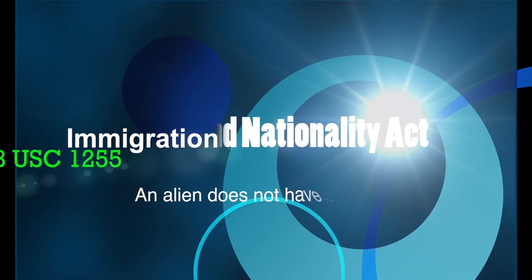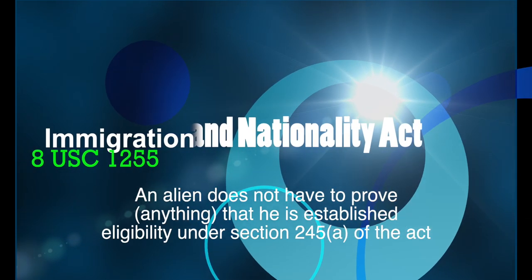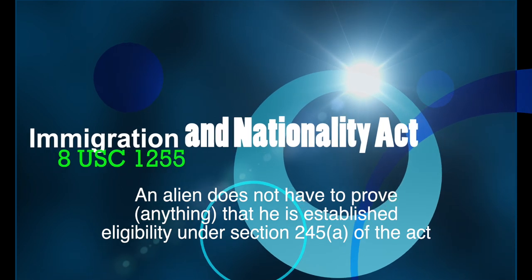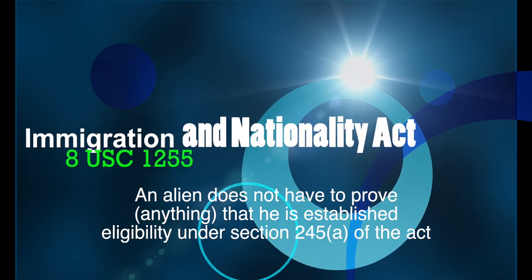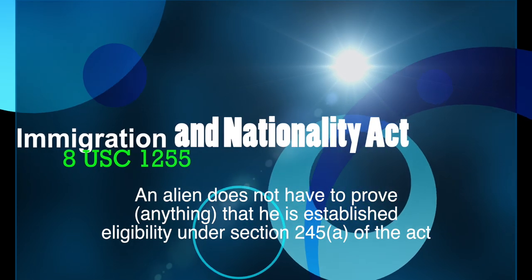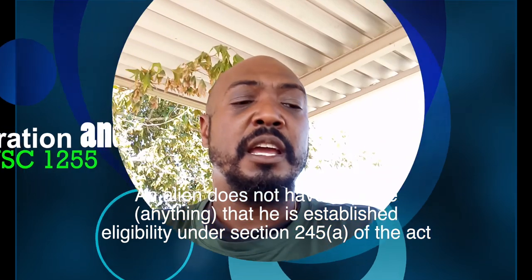Under the Immigration and Nationality Act, 8 USC 1255, an alien does not have to prove that they have established eligibility under Section 245(a) of the Act. Basically what that means relates to border patrol issues that a lot of people are having.